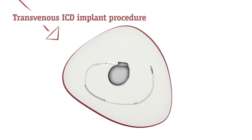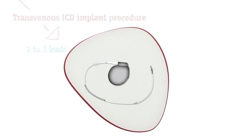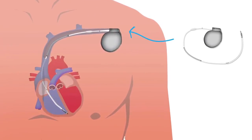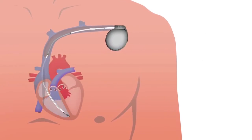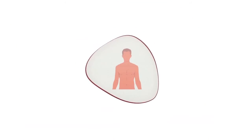A transvenous ICD connects to the inner walls of the heart with one to three leads. These leads are fed through a vein across the heart valve into the heart. The pulse generator is implanted on the left side near the collarbone. Depending on the doctor's usual practice, a local or general anesthetic is given to make the patient comfortable.